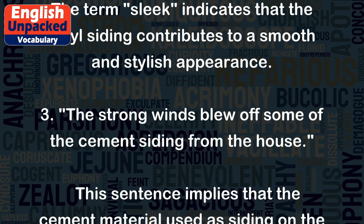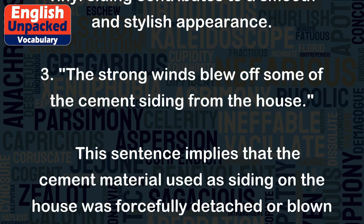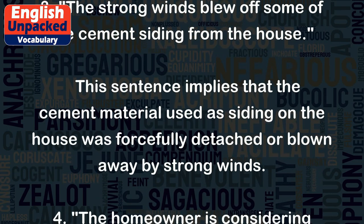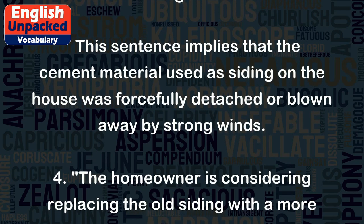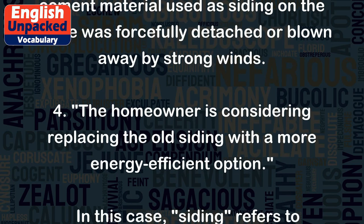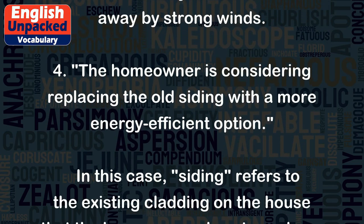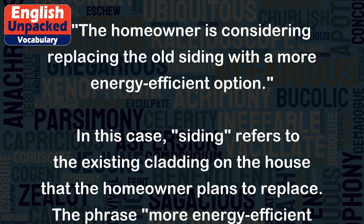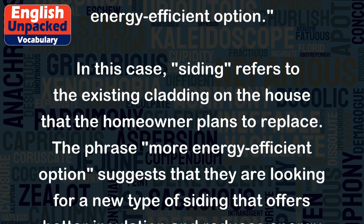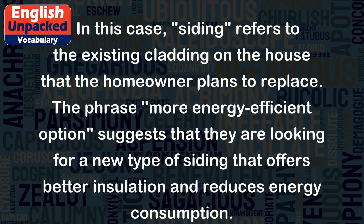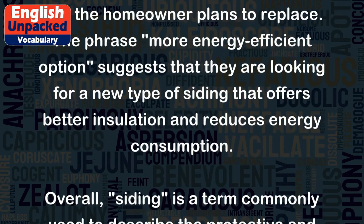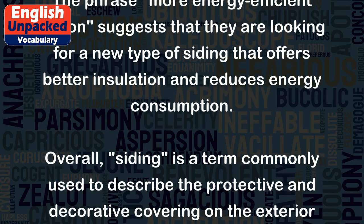3. The strong winds blew off some of the cement siding from the house. This sentence implies that the cement material used as siding on the house was forcefully detached or blown away by strong winds. 4. The homeowner is considering replacing the old siding with a more energy-efficient option. In this case, siding refers to the existing cladding on the house that the homeowner plans to replace. The phrase more energy-efficient option suggests that they are looking for a new type of siding that offers better insulation and reduces energy consumption.